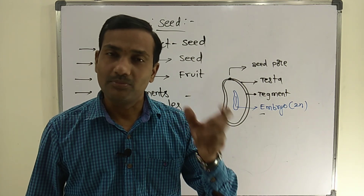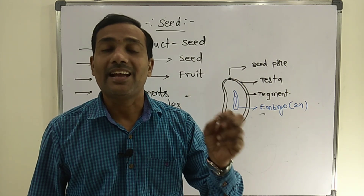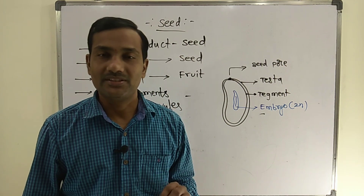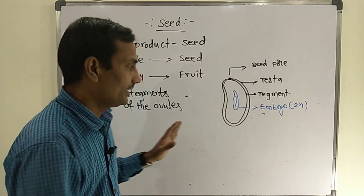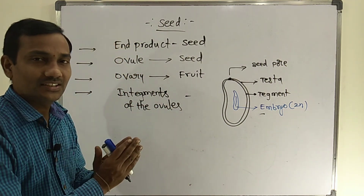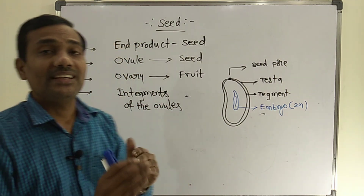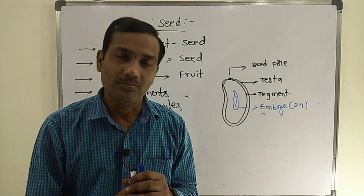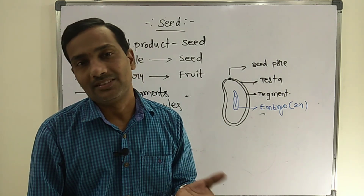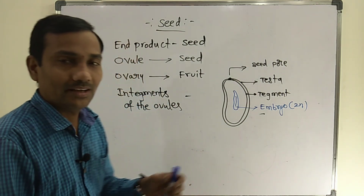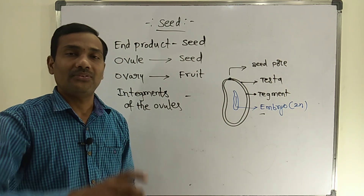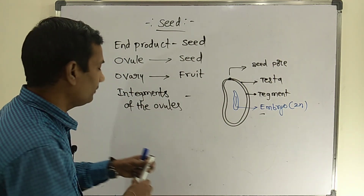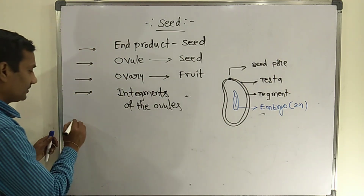After maturation, all seeds enter into a period of inactivity called dormancy. After maturation of the seed, seeds may or may not consist of endosperm. Based on the presence and absence of endosperm, matured seeds are broadly divided into two types.